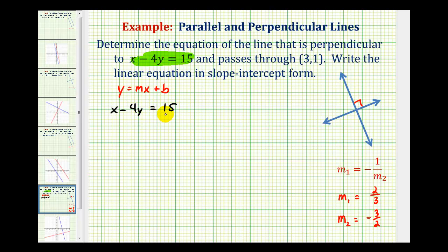So if we have x minus 4y equals 15, we need to solve this equation for y. So we'll start by subtracting x on both sides. So we'll have negative 4y equals negative x plus 15. And then the last step, we'll divide both sides of the equation by negative 4.